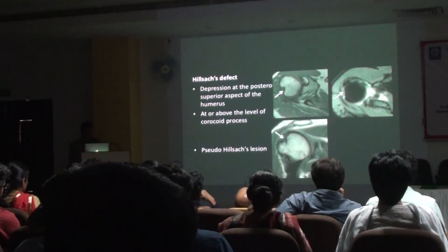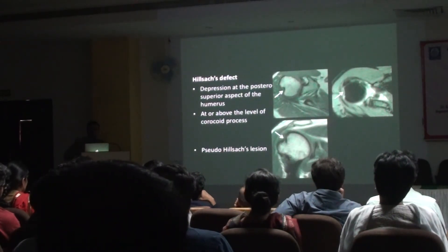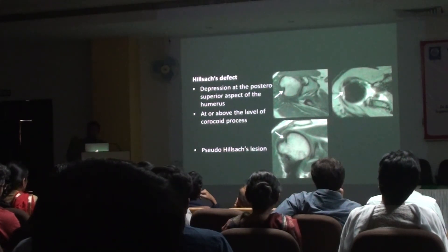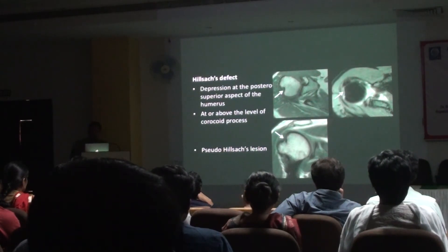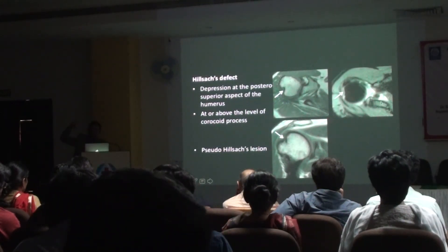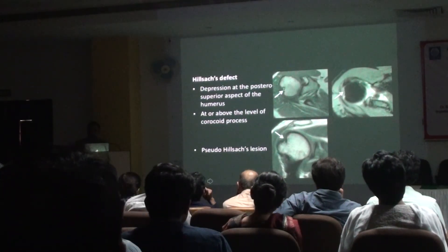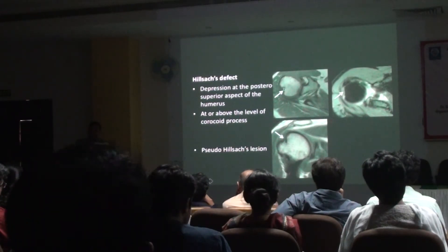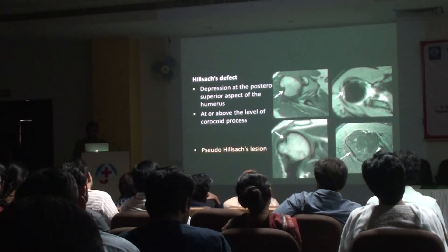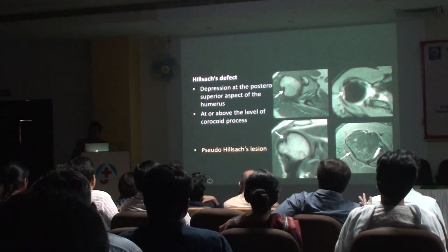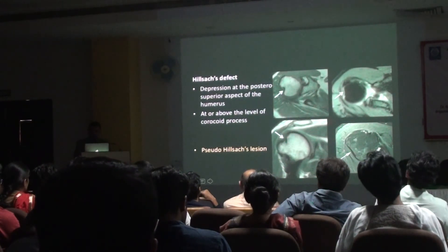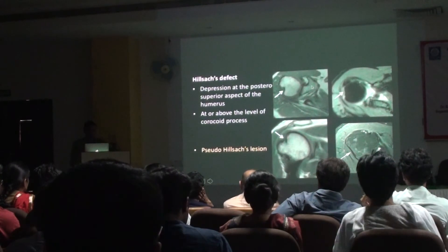For traumatic anterior instability: first, check for a Hill-Sachs lesion. General rule — anything at or above the level of the coracoid process on an axial image is where you need to see your Hill-Sachs lesion. You cannot go below the level of the coracoid process on axial image and comment about a Hill-Sachs lesion, because you get a pseudo-Hill-Sachs lesion — it always looks slightly flattened or concave below that level. The Hill-Sachs is usually posterior-superior.